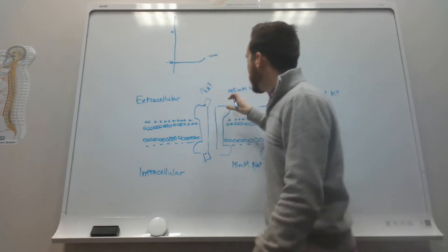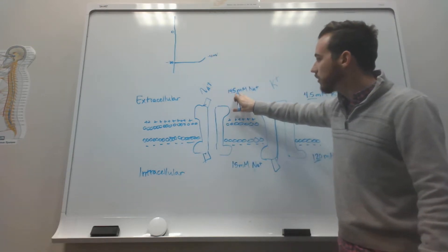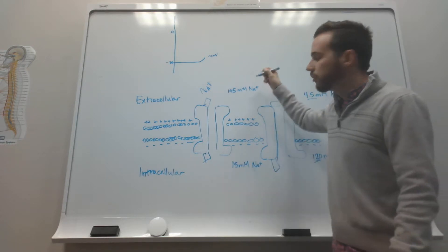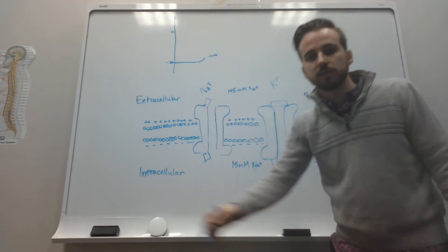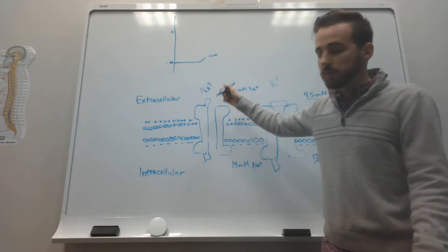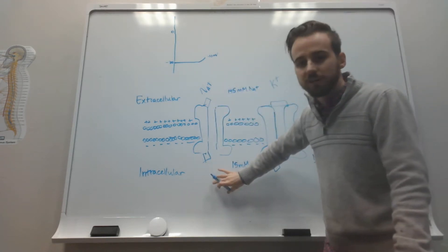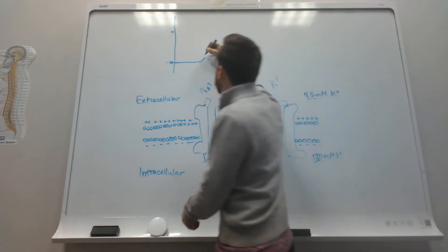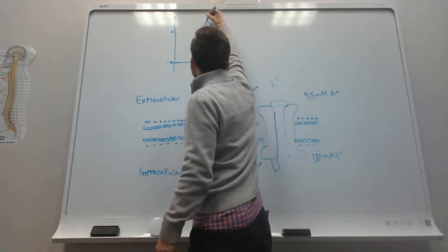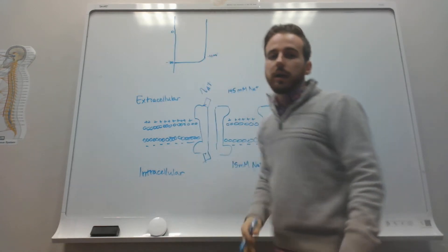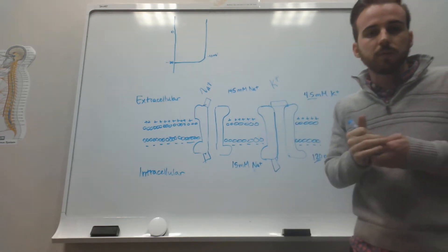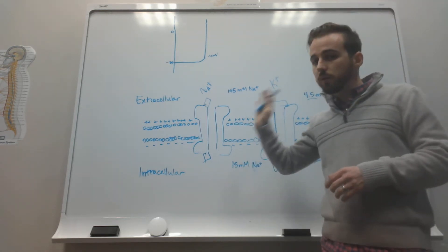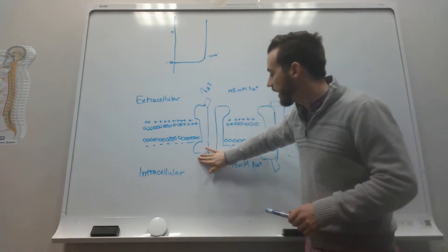Because there's more sodium on the outside than on the inside, sodium is going to want to rush into the cell. And since sodium is positively charged, that makes the charge inside the cell more positive, and it goes very, very quickly. It approaches the sodium equilibrium potential. It doesn't quite get there because of this inactivation gate.